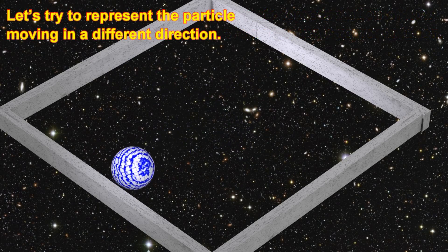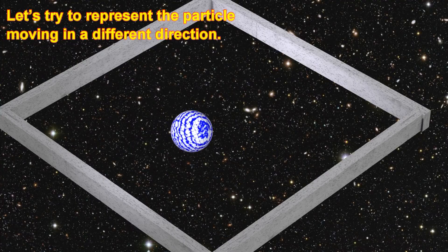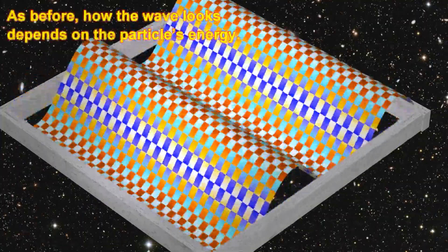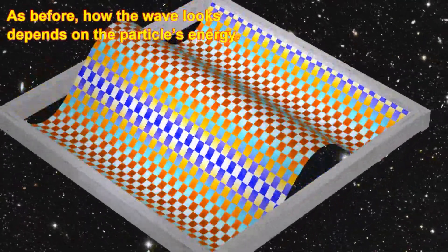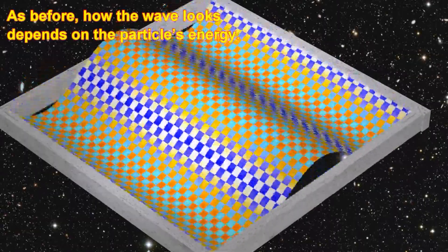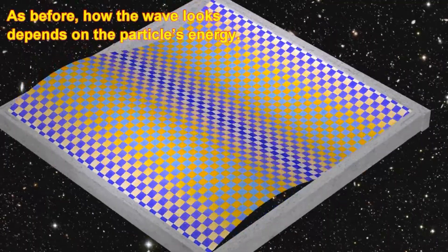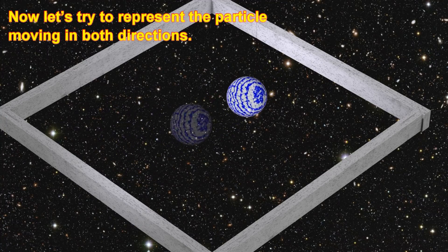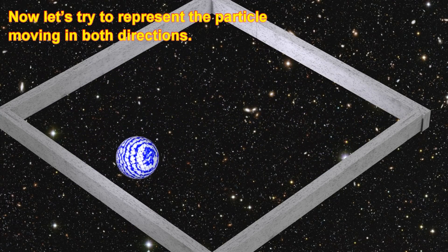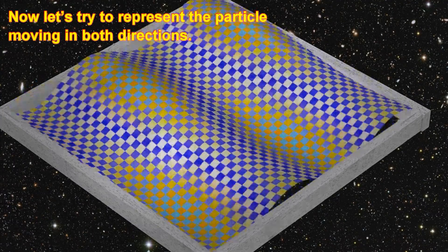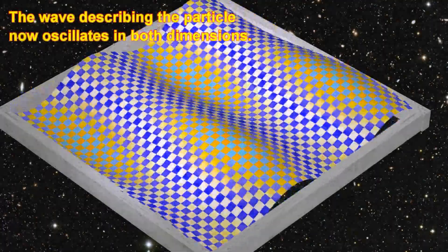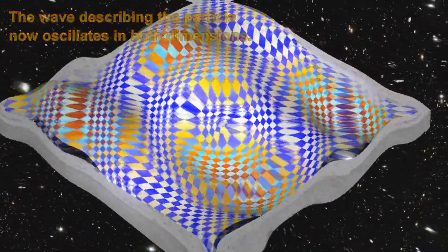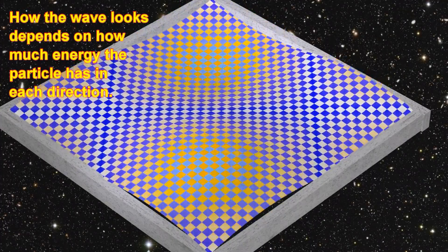Let's try to represent the particle moving in a different direction. As before, how the wave looks depends on the particle's energy. Now let's try to represent the particle moving in both directions. The wave describing the particle now oscillates in both dimensions. How the wave looks depends on how much energy the particle has in each direction.